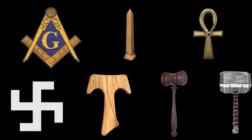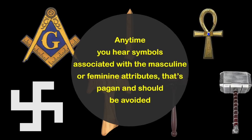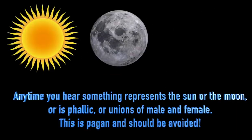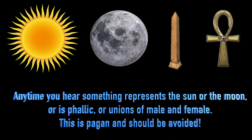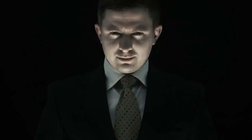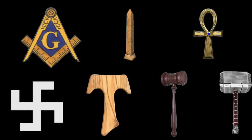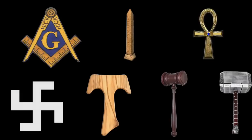Tying all these symbols together, there is a common theme. Anytime you hear symbols associated with masculine or feminine attributes, that's pagan and should be avoided. Anytime you hear something representing the sun or the moon, or phallic unions of male and female, this is pagan and should be avoided. These Masonic signs are all pointing to Lucifer, the light bearer, directing us to their Masonic Christ — whom believers know as the Antichrist. These symbols are all around us and they are using them to communicate wickedness.